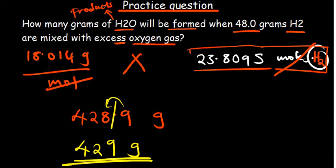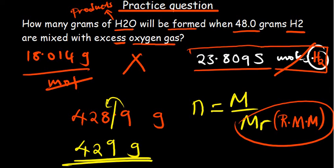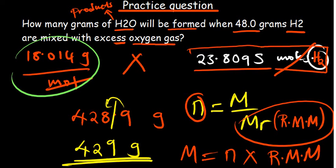In summary, the key formula is: number of moles = mass ÷ molar mass, where molar mass can also be the relative molecular mass for a compound or relative formula mass. We calculated the relative molecular mass of water, determined moles, and then found the mass by multiplying moles by the relative molecular mass. This approach is also known as dimensional analysis, and with this solid foundation we can proceed to more advanced stoichiometry concepts.